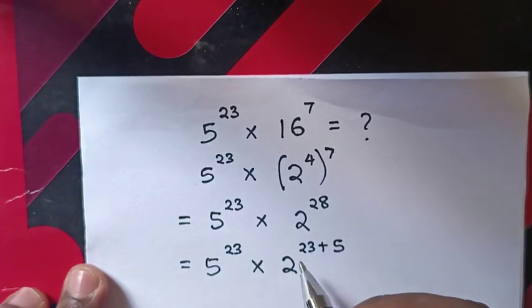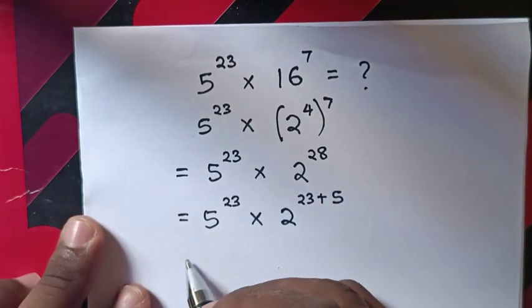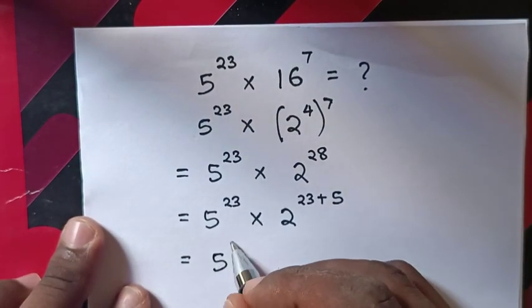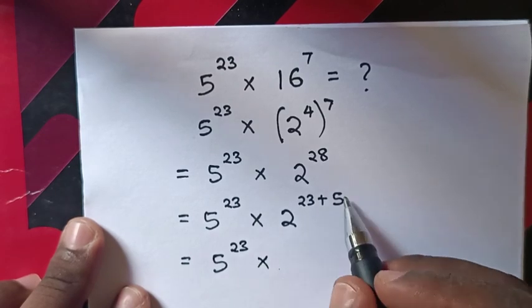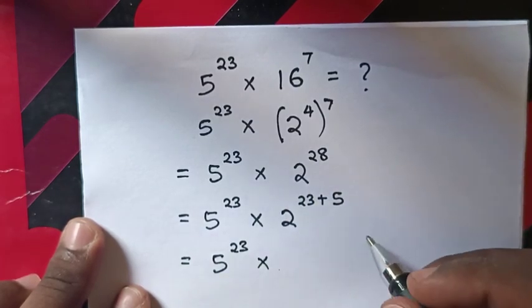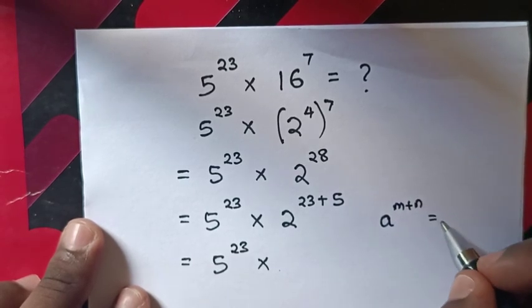That's the same as 5^23 times 2^28. From here we'll apply the exponential rule: a^(m+n) equals a^m times a^n.